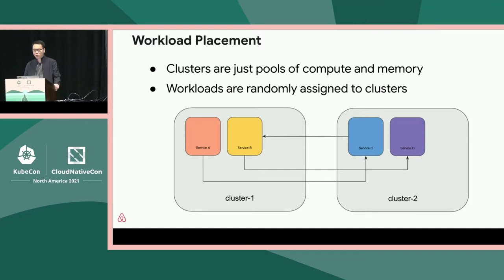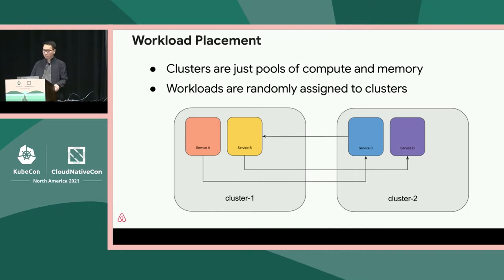How do we partition workloads across clusters? At Airbnb, we treat clusters as pools of compute and memory resources. Workloads are randomly assigned to clusters at creation time. As a result, services make cross-cluster network requests all the time. In our example call chain, three cross-cluster network calls were made. In production, it often takes more than 10 hops, most of which are cross-cluster, to serve a user request. This cross-cluster communication pattern heavily influences our next design decision.